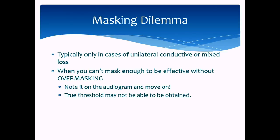With over-masking, you run into the masking dilemma — when you can't put enough masking in to satisfy the masking rules you're using. It typically only becomes a problem with unilateral conductive hearing loss, unilateral mixed hearing loss, or highly asymmetric conductive or mixed hearing loss. When you can't mask enough to be effective without over-masking, you may not be able to obtain a true threshold. You note it on the audiogram, usually with an asterisk labeled 'masking dilemma,' so other audiologists will understand.